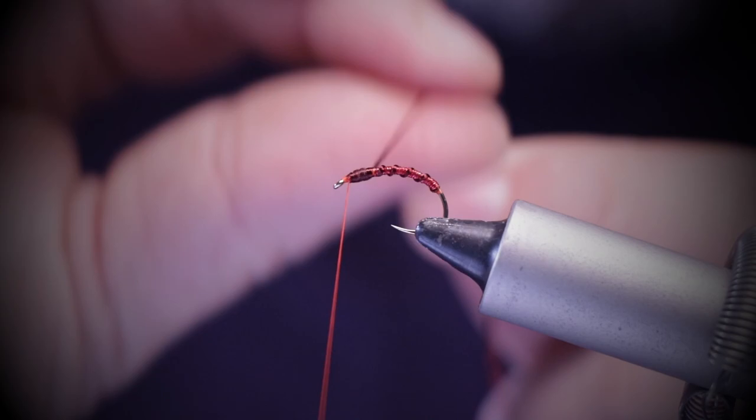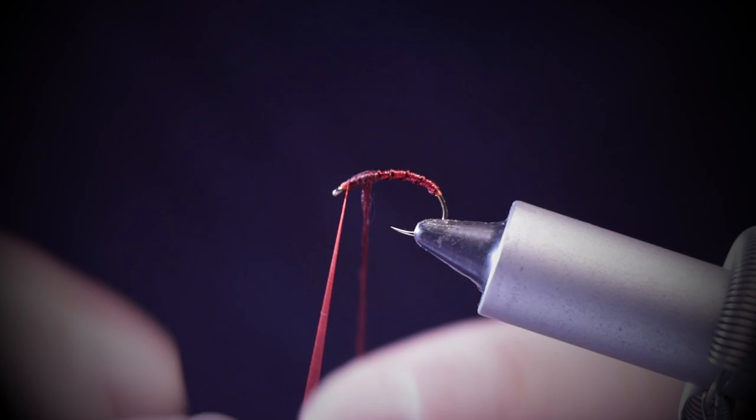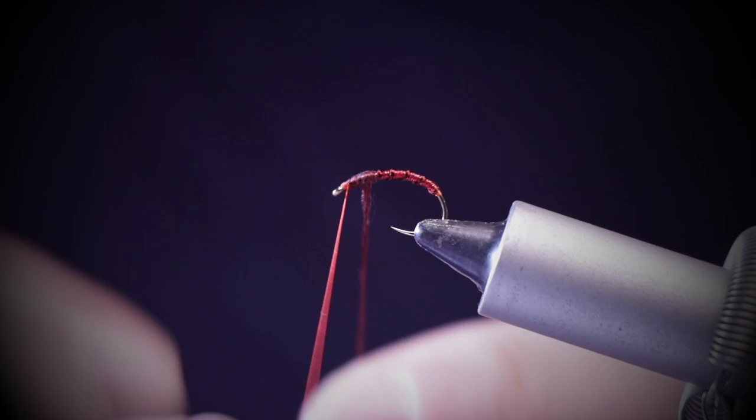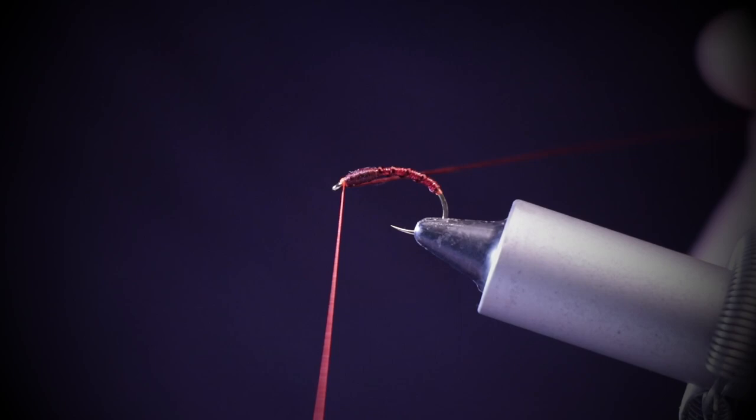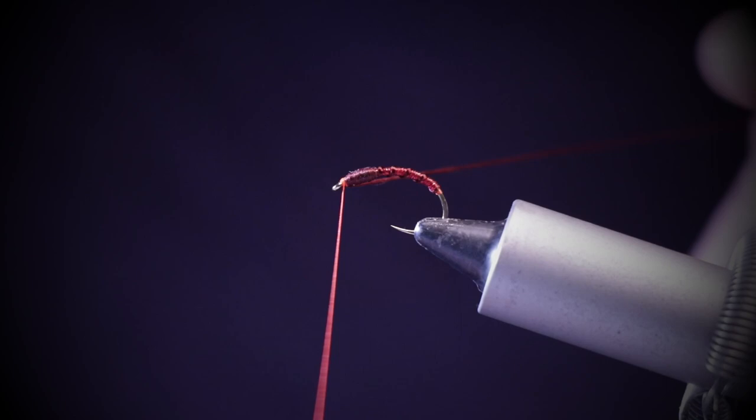So what I like to do is go back and forth a couple of times just to build up the profile of the thorax. Not too much because you'll build it up a little bit with the resin. Bring it to the front, cross over your thread, and lock it off. A couple of turns to lock it off, pull it back, and then cut it away.